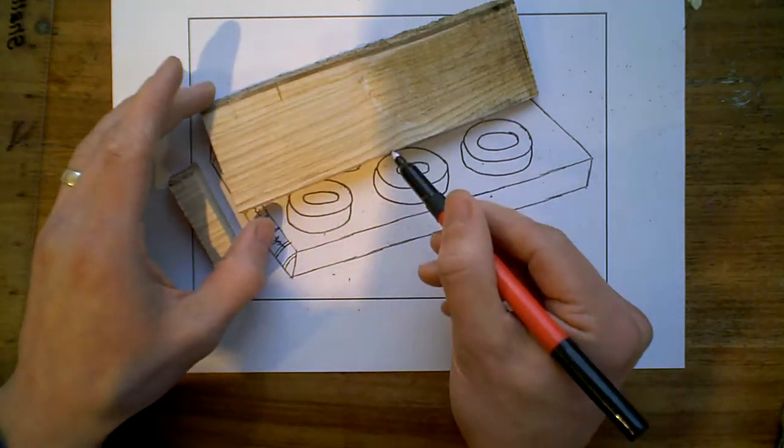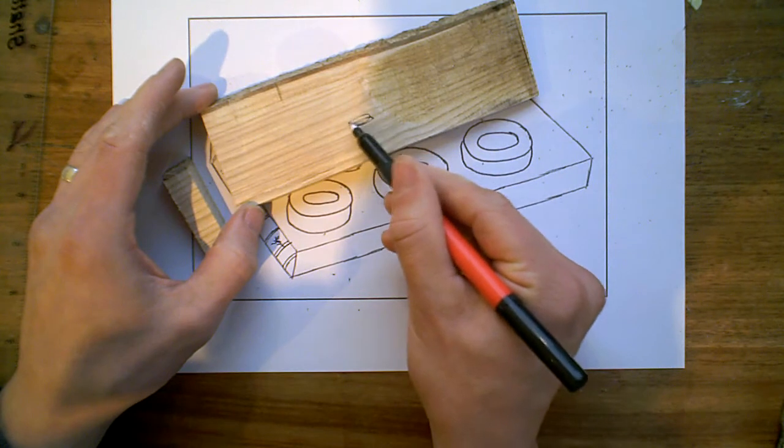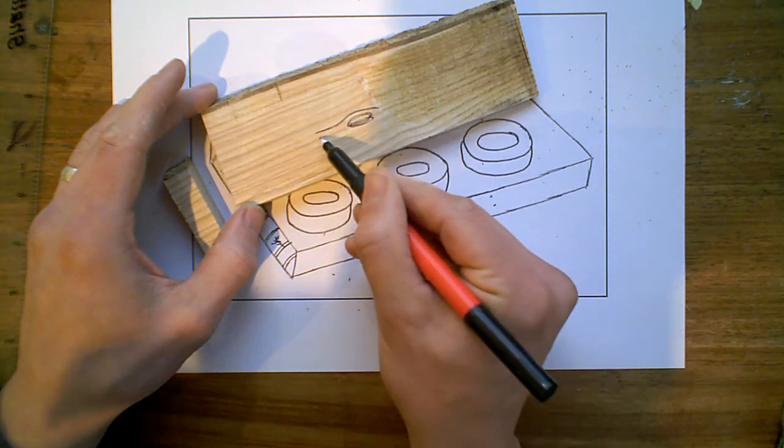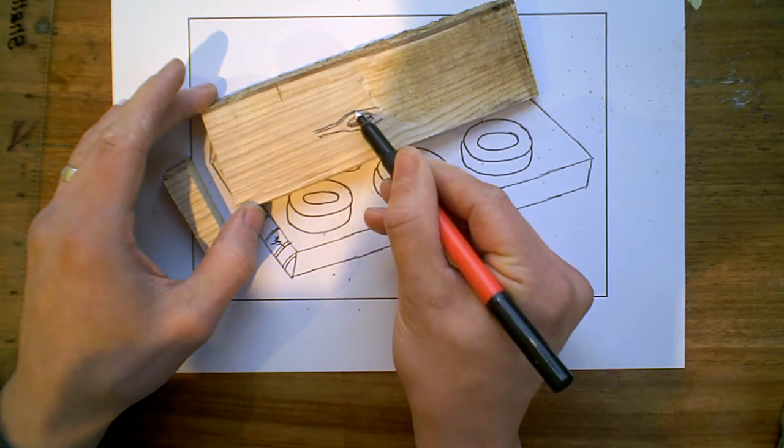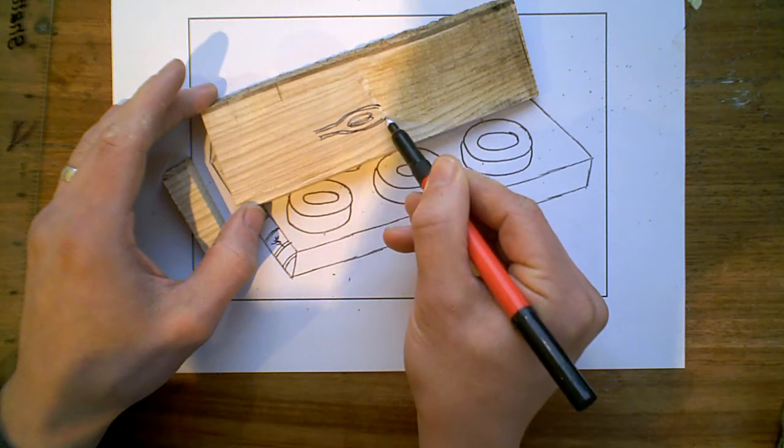If they hit an object, so if there was a branch growing out of this, let's just pretend there was a branch growing out of there on the tree, what you would find is they would grow around it. So they would grow around the knot and that deflects the shape of the streaks of the growth rings running through the tree.